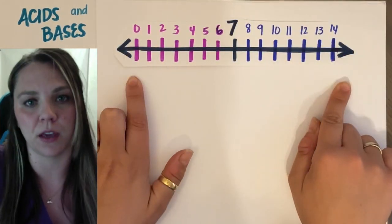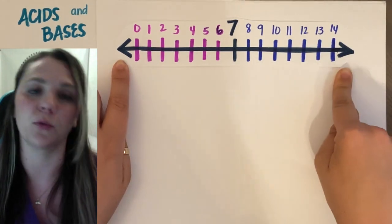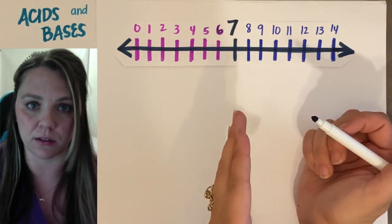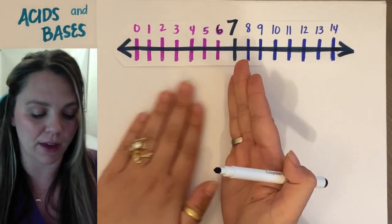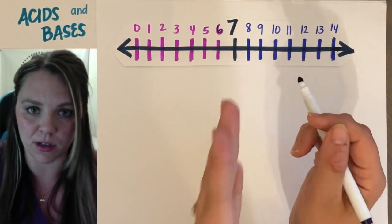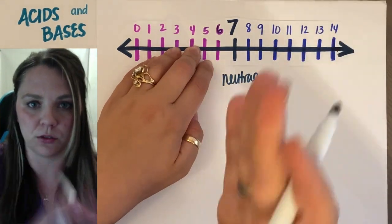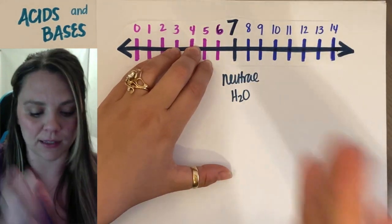So here's what my pH scale would look like. It has a range of 0 all the way up to 14. At 7, you're directly in the middle of your pH scale. At 7, you have the exact same amount of acid particles as base particles. So right at 7 in the middle, this is neutral. 7 is neutral, so this would be like pure water at 7.